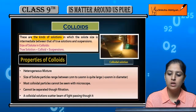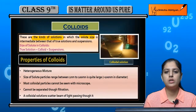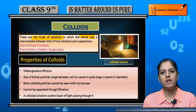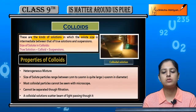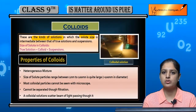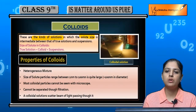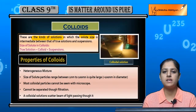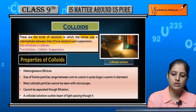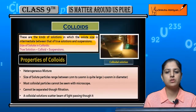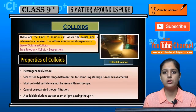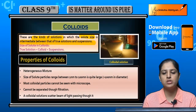The types of solutions are defined by solute size — that is, the size of particles added to a solvent to form a solution. In colloids, the solute particle size is intermediate between that of true solutions and suspensions, meaning it falls in the range between their respective solute sizes.